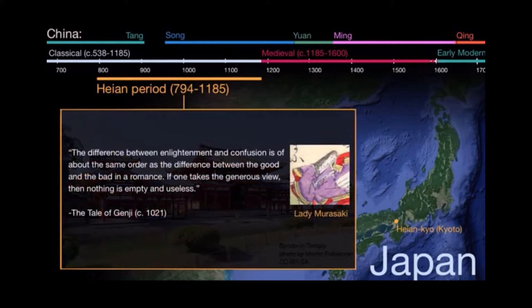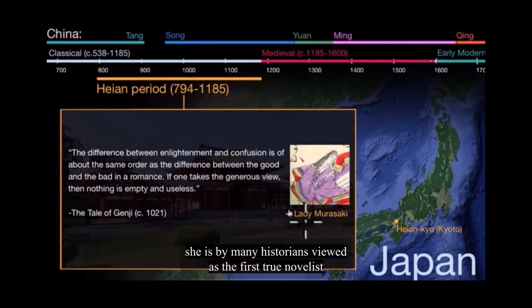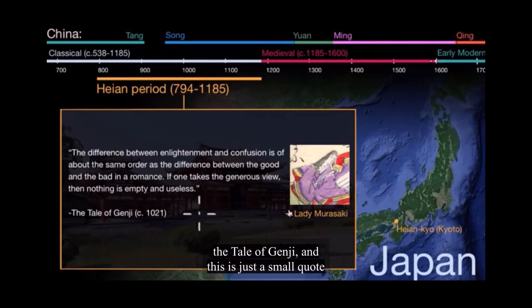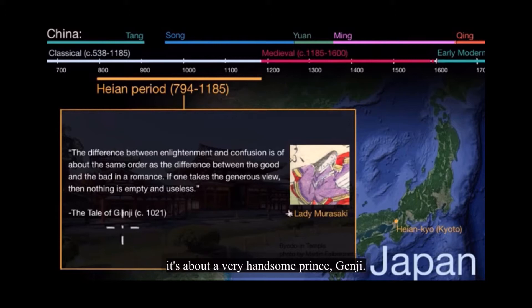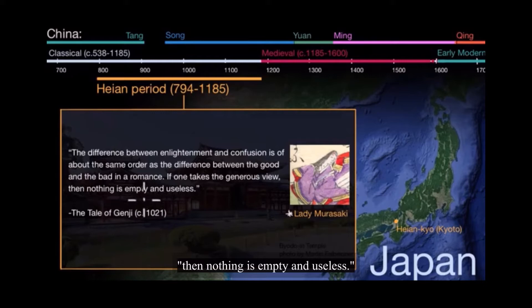The Tale of Genji was written by Lady Murasaki, believed to be a member of the Fujiwara family. Lady Murasaki — before Chaucer, before Shakespeare — is viewed by many historians as the first true novelist in human history, not just Japanese history. A quote from the novel: 'The difference between enlightenment and confusion is of about the same order as the difference between the good and the bad in a romance. If one takes the generous view, then nothing is empty and useless.'